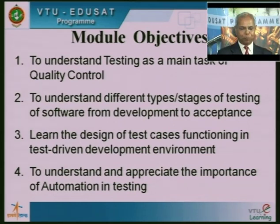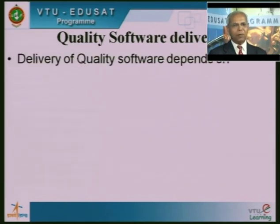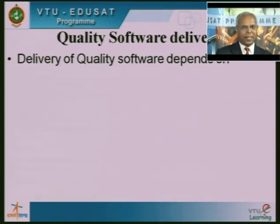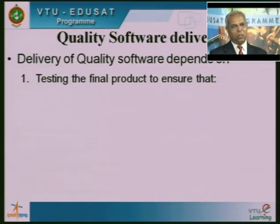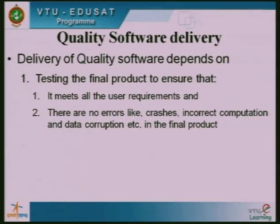Let us start with the quality of software, because testing is basically a quality phenomenon. Delivery of good quality software to the client depends on testing the final product to ensure it meets all user requirements. We must also make sure there are no errors — like sudden crashes, wrong results, or data corruption — and that the software performs according to requirements. These problems need to be eliminated through quality control and testing.